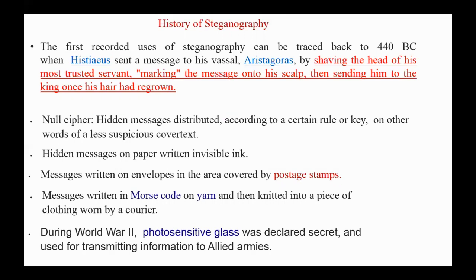Steganography methods were used throughout history, such as the use of null ciphers — hidden messages distributed according to a certain rule or key among other words of a less suspicious cover text. For example, we choose the first character of each word in the text, or the second, or any other character according to a certain rule. Writing using invisible ink is also a form of steganography.